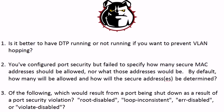So let's talk about that first question. Dynamic Trunking Protocol — you definitely want to turn that off if you're concerned about VLAN hopping. Another great trick is to put all of your unused ports into a separate VLAN that nobody else is using except those unused ports. It's a very effective way to stop VLAN hopping.